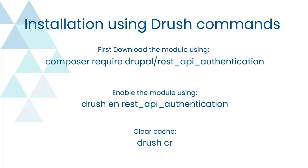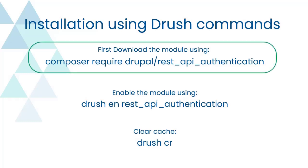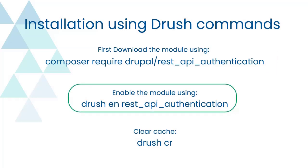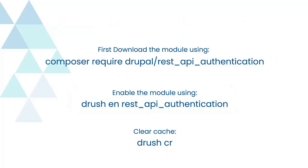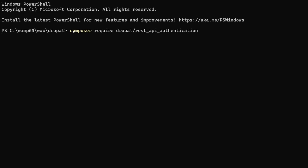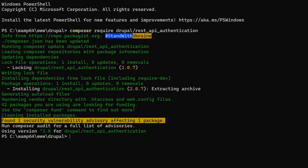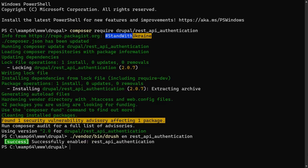Now let's start with the second method, Installation using Drush Commands. First, download the module using this Composer command, then enable the module using this Drush command, and clear the cache using this command. Let's download it using the Composer command. Now enable the module using the Drush command, and clear the cache using the Drush command.